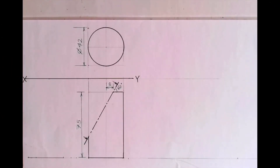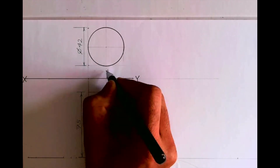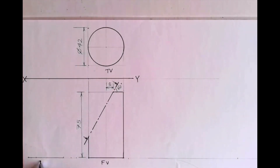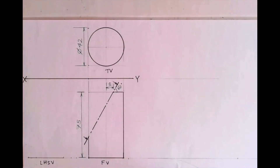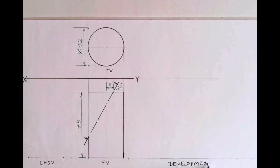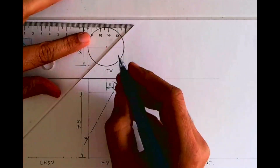Welcome to technical drawing. Today we'll draw a sectional top view, sectional side view, development, and TSS of this cut solid. The front view and top view are given. We'll be drawing the left hand side view and development next to the front view. This kind of problem comes in engineering as well as ICSE technical drawing exams.